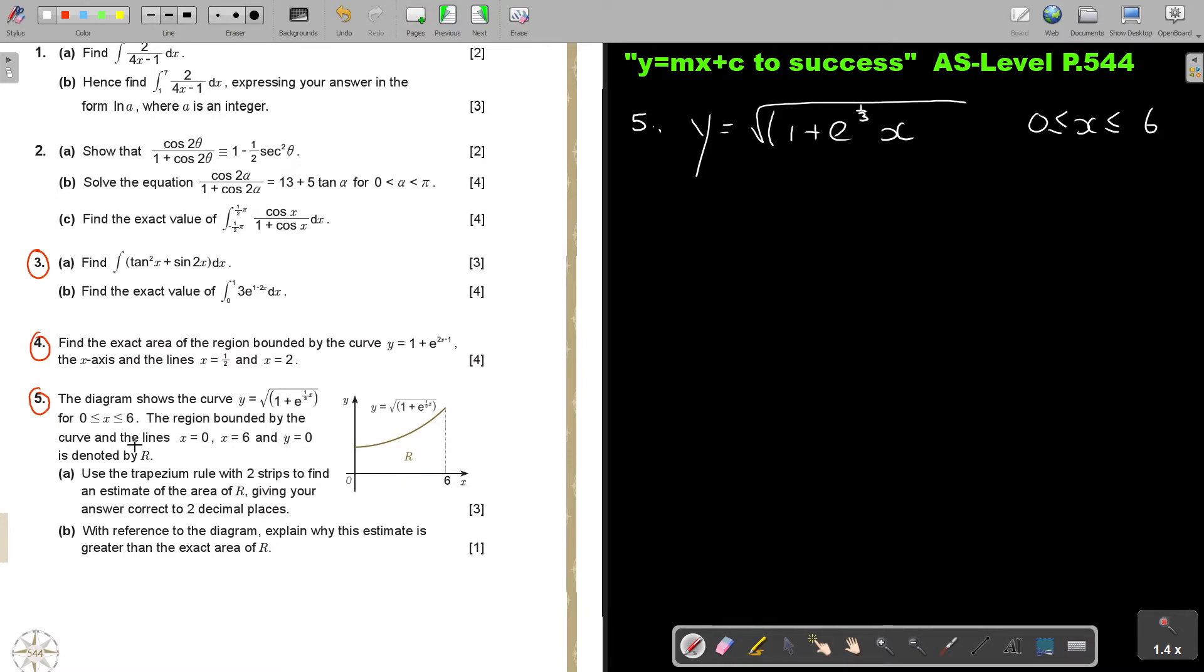Now, they say the region bounded by the curve and the lines, so 0 and 6, Y is 0, that one, is denoted by R. Use the trapezium rule, and here it comes, with two strips. So N is 2. To find the estimate of the area, giving you an answer to two decimal places. So let's just start there. Let's start with number A.